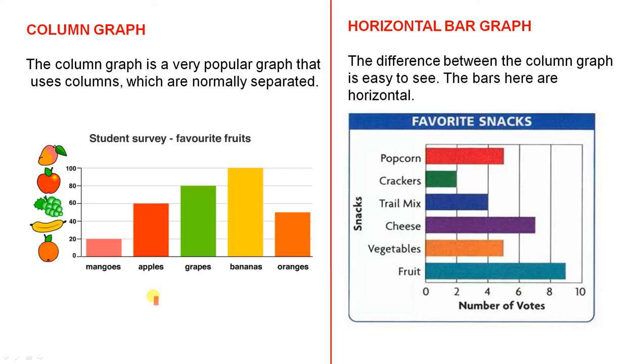So students were surveyed about their favourite fruits. So we have five fruits here that were mentioned and here we have the numbers. So you can see that bananas were the most popular and mangoes were the least popular.